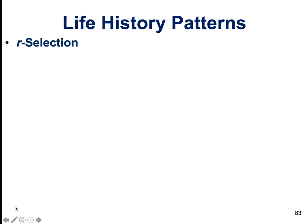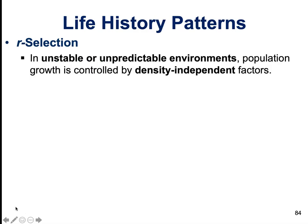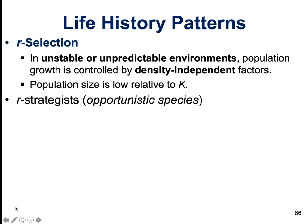R-selected life history patterns are found in unstable or unpredictable environments. Population growth is ultimately controlled by density-independent factors, and the population size tends to be relatively low — in other words, the environment could support many more individuals than are actually present. R-strategists are known as opportunistic species.